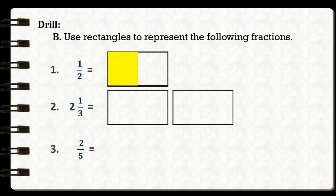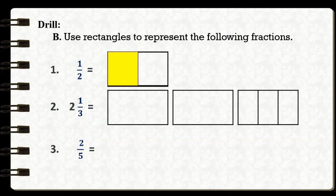For number two, we need to draw two rectangles and then another rectangle divided into three equal parts. We now have two whole rectangles and one-third of another rectangle, so that's equal to two and one-third.